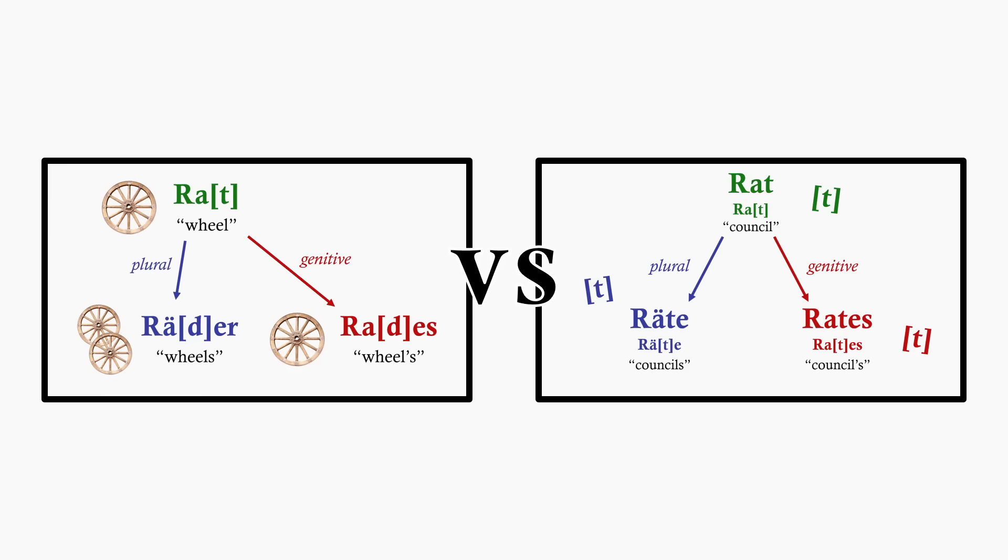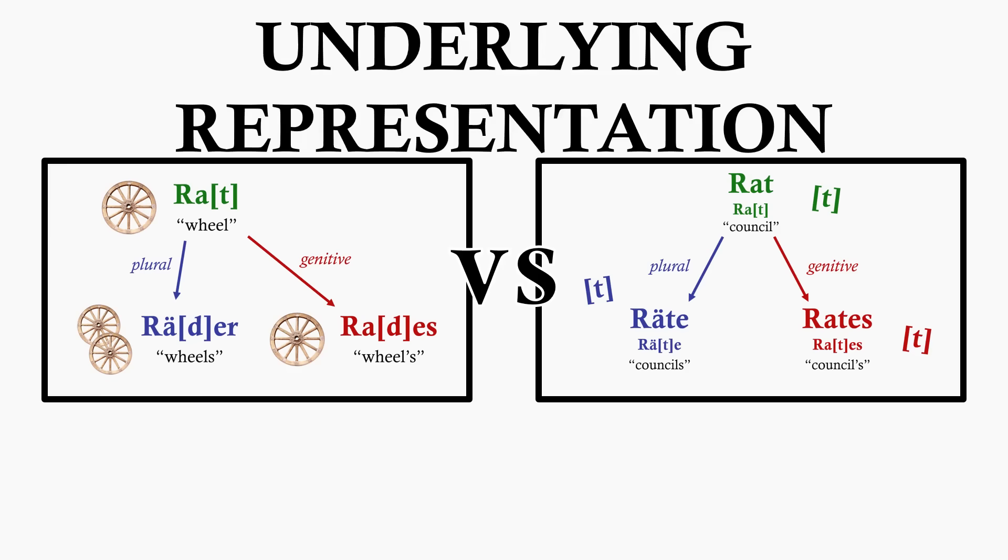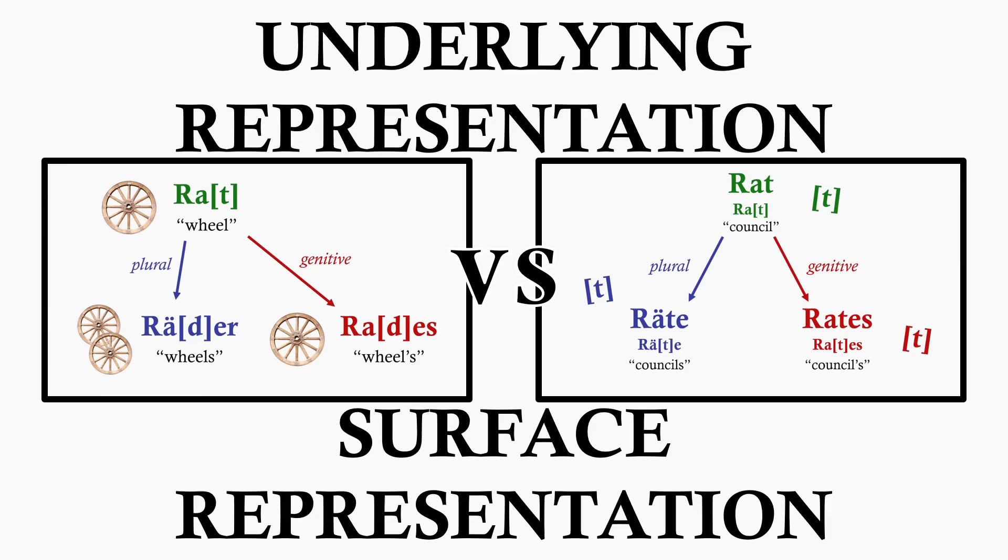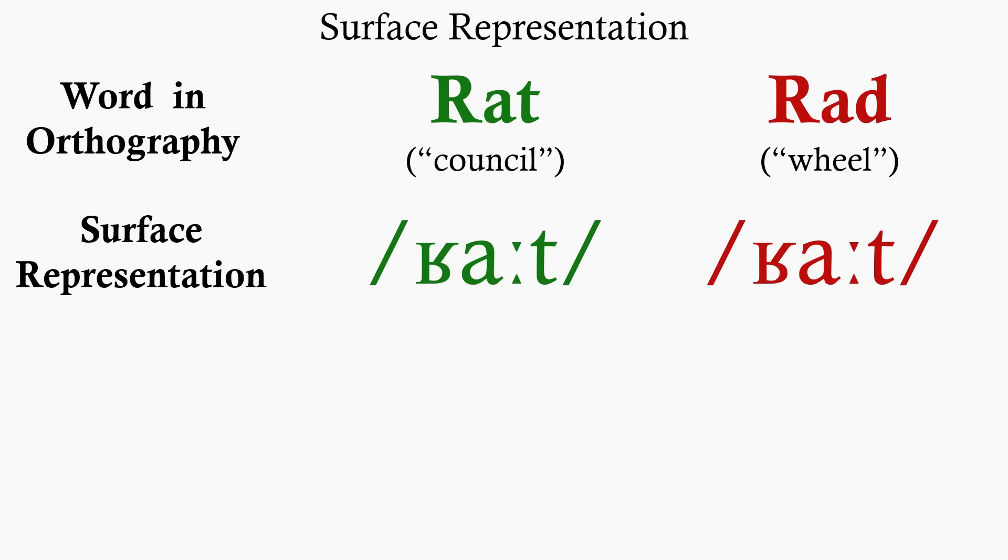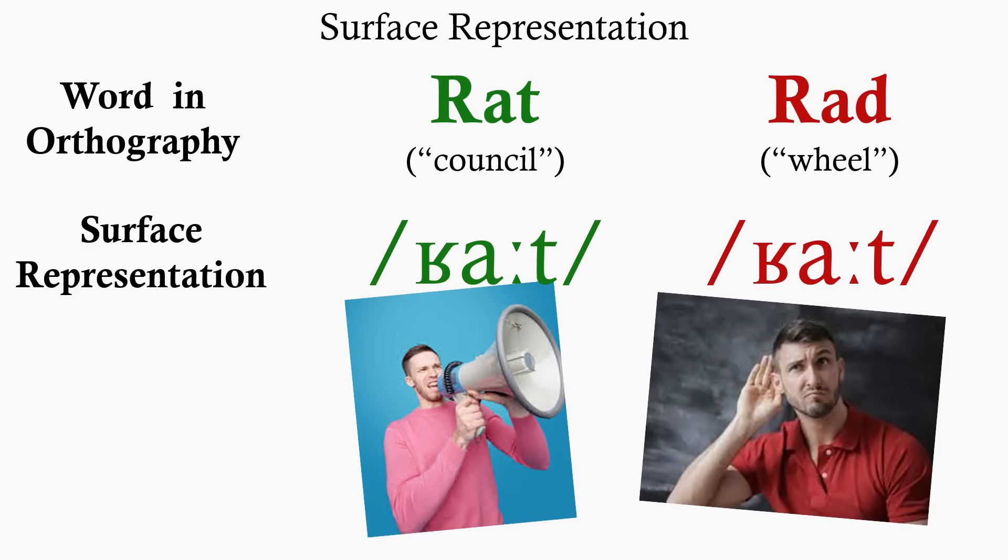To explain this discrepancy, linguists use the terms underlying representation and surface representation. The surface representation of, in this case, a word, is its physical manifestation in the real world. It is its actual realization. The thing you say and the thing you hear when speaking. The underlying representation, on the other hand, is the abstract form in which a word is stored in a mind.